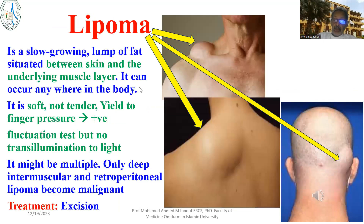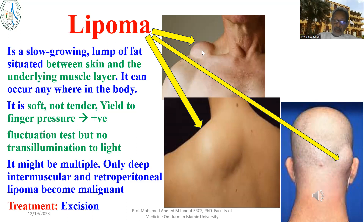Then the subcutaneous swellings. I will start with lipoma. Lipoma is a subcutaneous swelling — you can grasp the skin over it. It is usually rounded, smooth, and very soft. You can demonstrate a fluctuation test which is positive, but there is no transillumination, or it is negative for transillumination. It is always behind the skin, always painless and smooth and not tender.